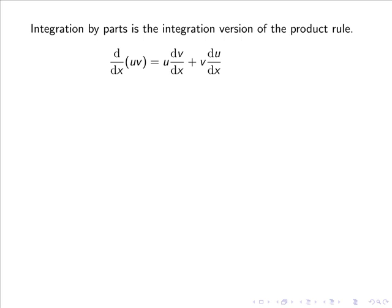Integration by parts is the integration version of the product rule. The product rule is given by d/dx(uv) = u(dv/dx) + v(du/dx).